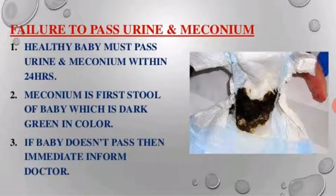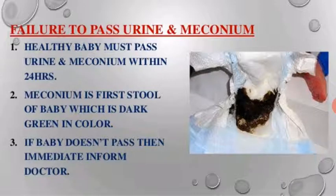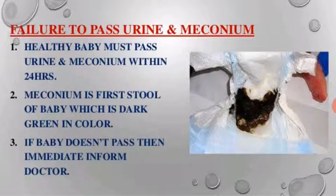Failure to pass urine and meconium: a healthy baby must pass urine and meconium within 24 hours. Meconium is the first stool of the baby, which is dark green in color. If the baby does not pass meconium, inform the doctor immediately.